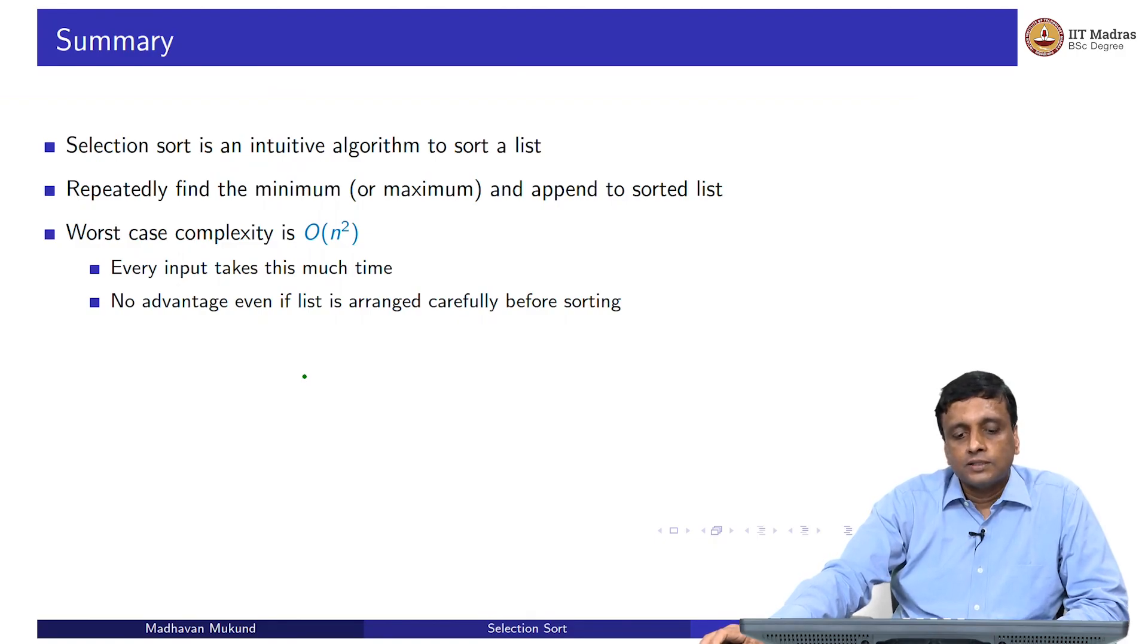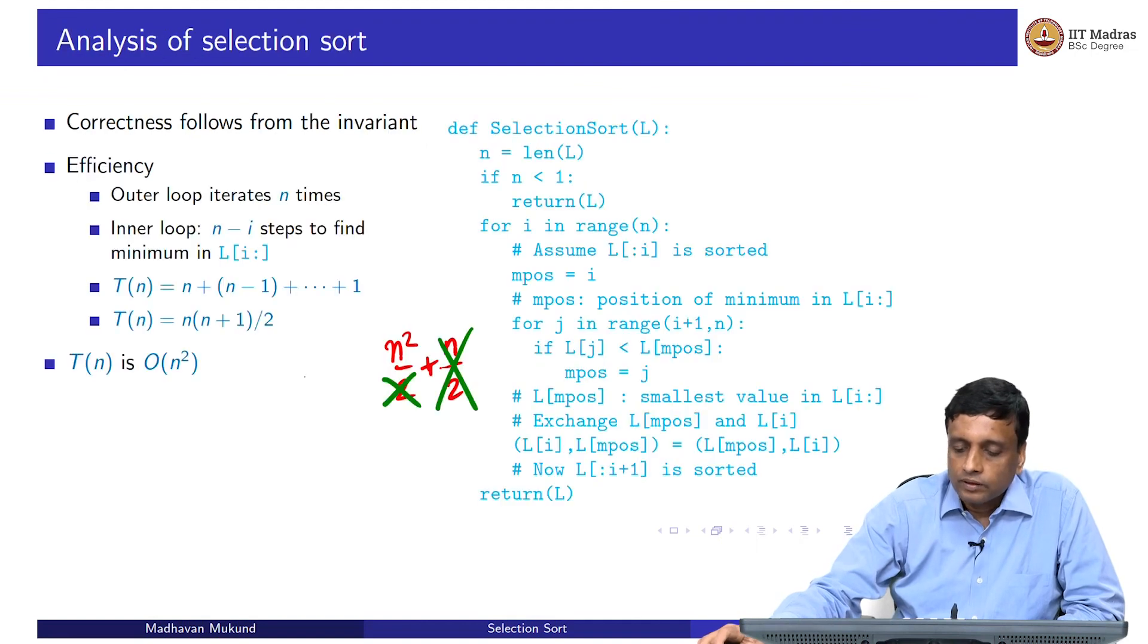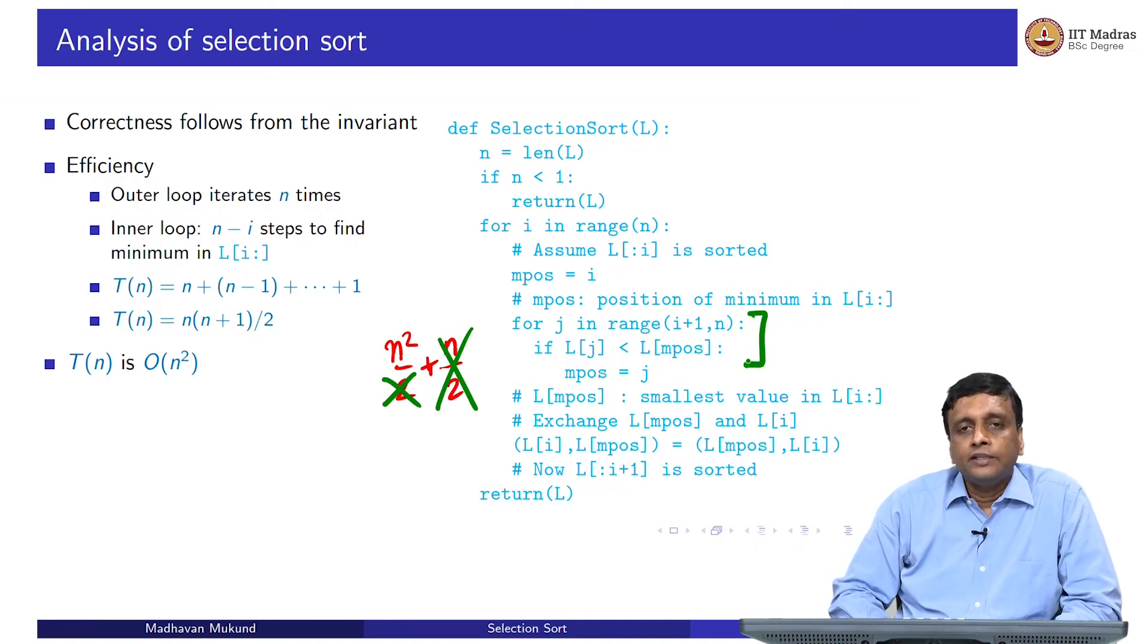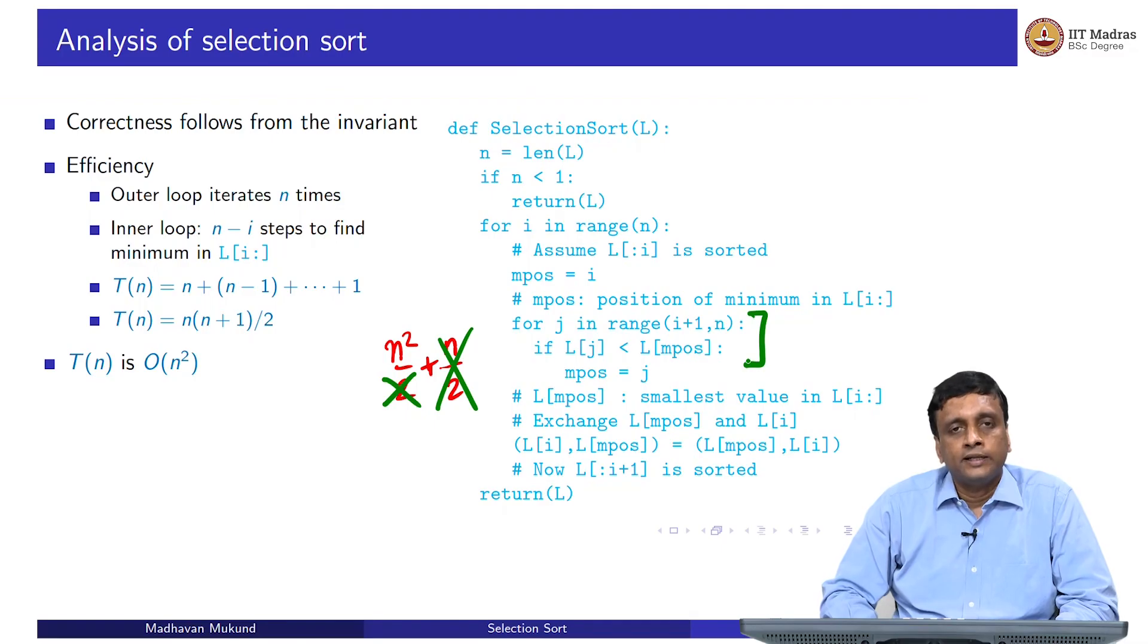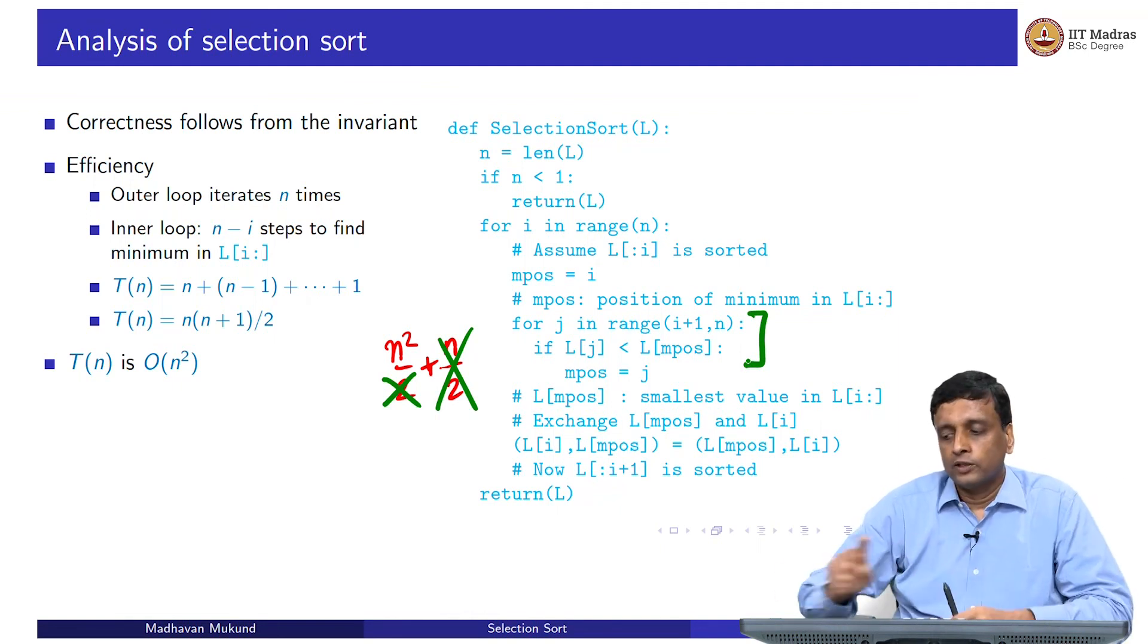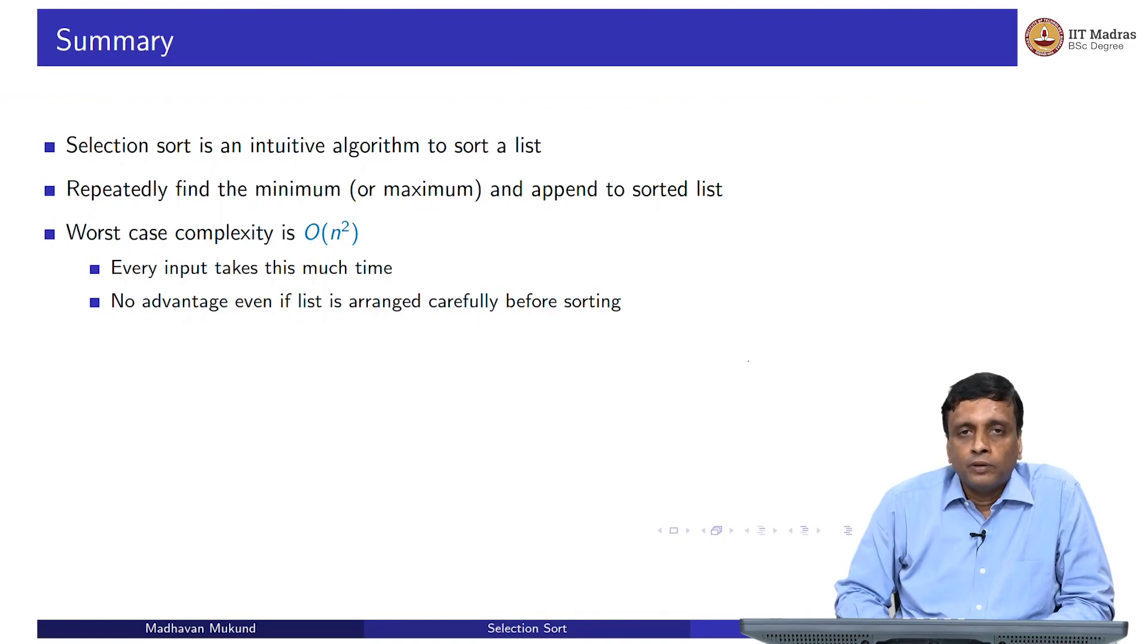Now, one of the features of this algorithm is that not only is the worst case big O n square, but actually every case is big O n square. That is because if you look at this loop, this loop will scan the entries from i plus 1 to n regardless of what the status of those entries is. It is not really influenced by whether those entries are already in sorted order or not, it is just going to scan every one of them and try to update the minimum. It has no performance improvement on whether this list was already sorted or not sorted in a particular order. It is as good or as bad, whether you had a completely random order or whether you had some nice order to start with. This is some case where the worst case is really every case. Selection sort is really big O of n square in every case. There is no advantage, even if the list is arranged carefully before sorting.